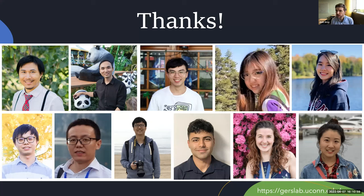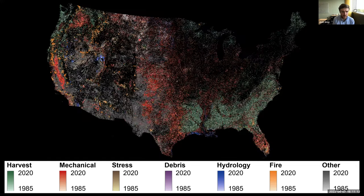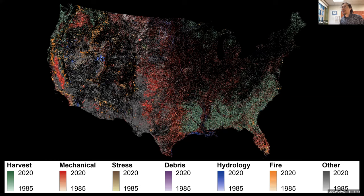Someone requested toggling back to the slide with the change agent map. Regarding how long it took to complete the project: getting the results takes us more than a month — first running the COLD algorithm and then classifying. The classification itself is not that computationally expensive, but running the COLD algorithm to detect the breaks in the time series is what takes the most time — about a month using around 1,000 cores running in parallel.